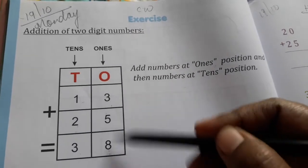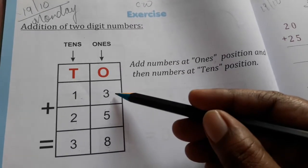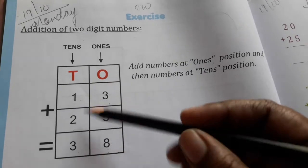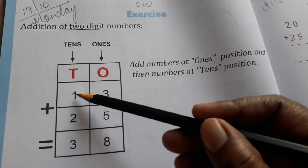First we have to add one side numbers here, then the tens side, like this.